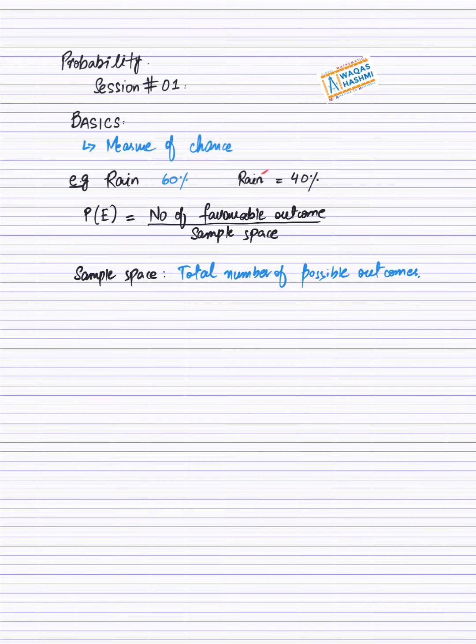Ab iski sabse practical example. Maan lijiye ke aapke paper hoongay CIE ke. Toh aapka kya result aayega? Ya toh aapke paas A star aasakta hai, A aasakta hai, B aasakta hai, C, D, E, and then U. Toh yeh aapke paas jo options hai, that is your total number of possible outcomes. Ke CIE mein aapka in grade mein se koi grade aasakta hai. One, two, three, four, five, six, seven. Toh yeh seven hua meri paas, yeh mera kiya hua, that is my sample space.